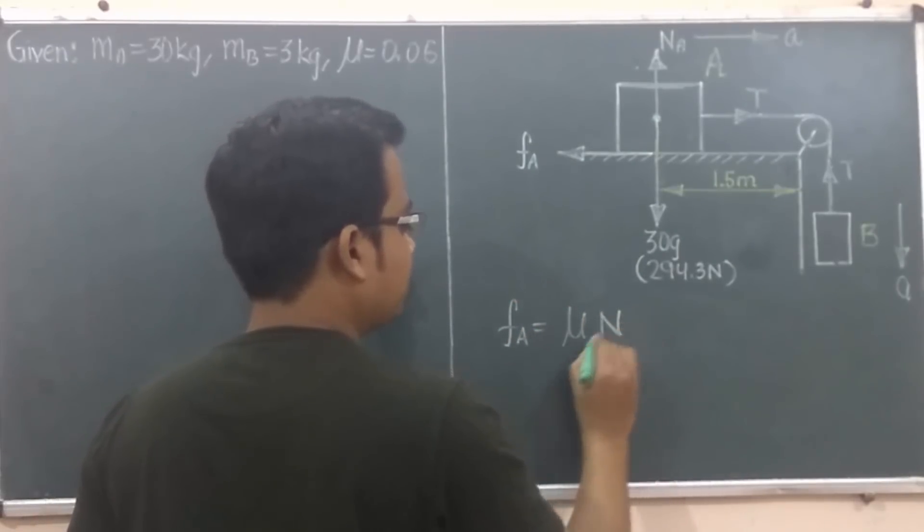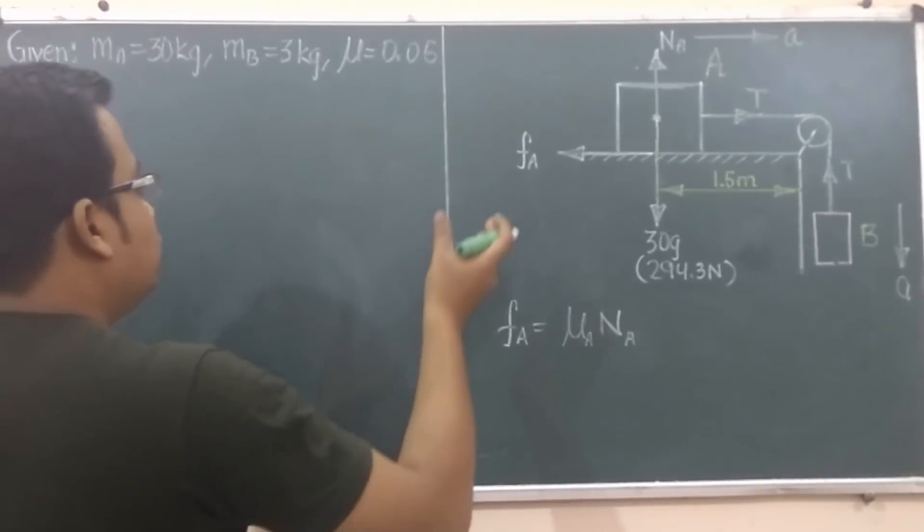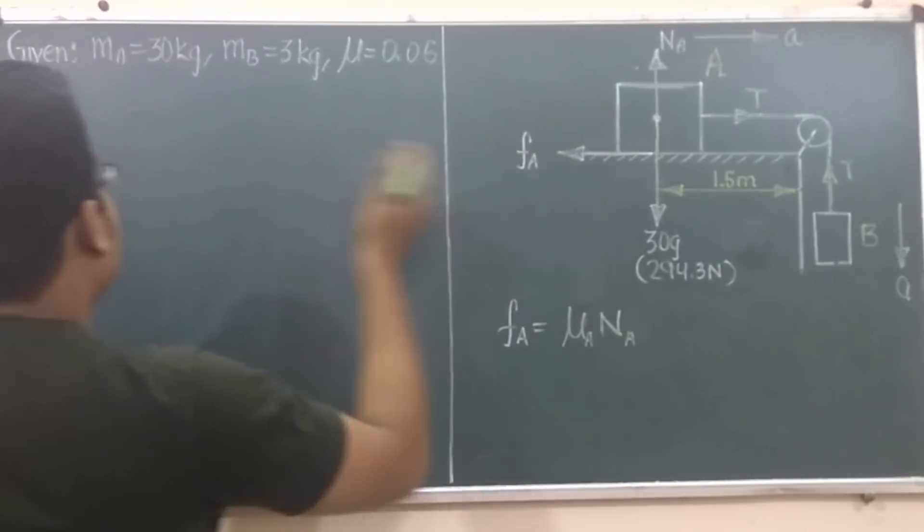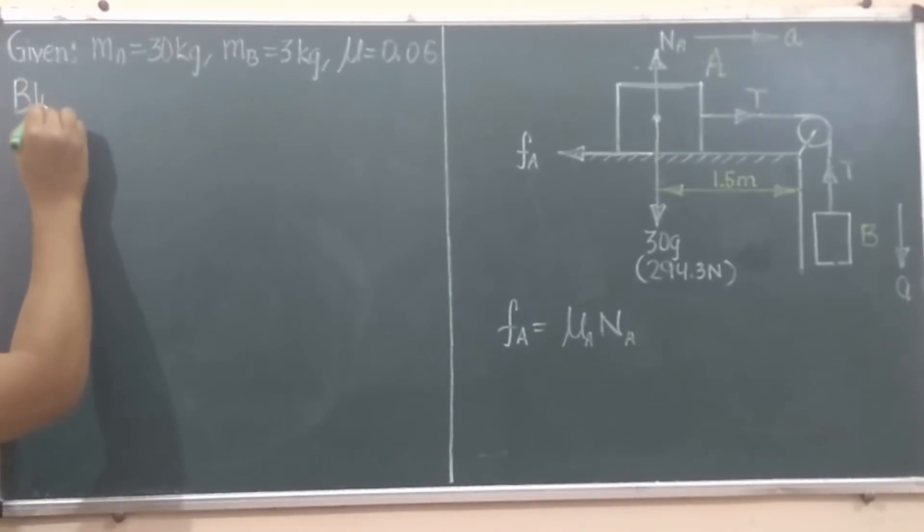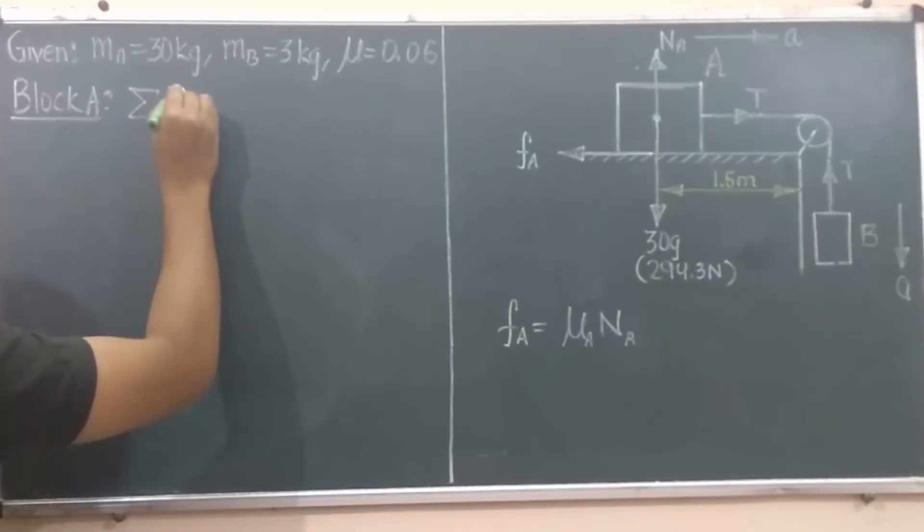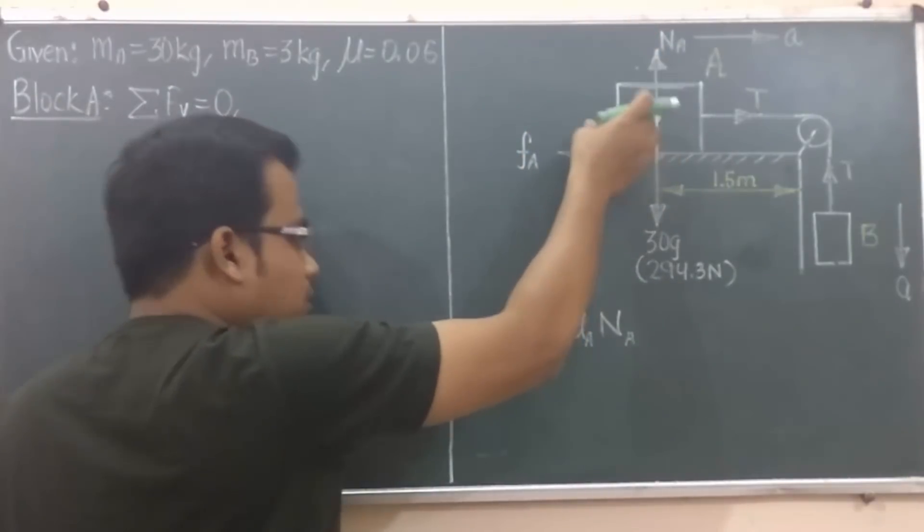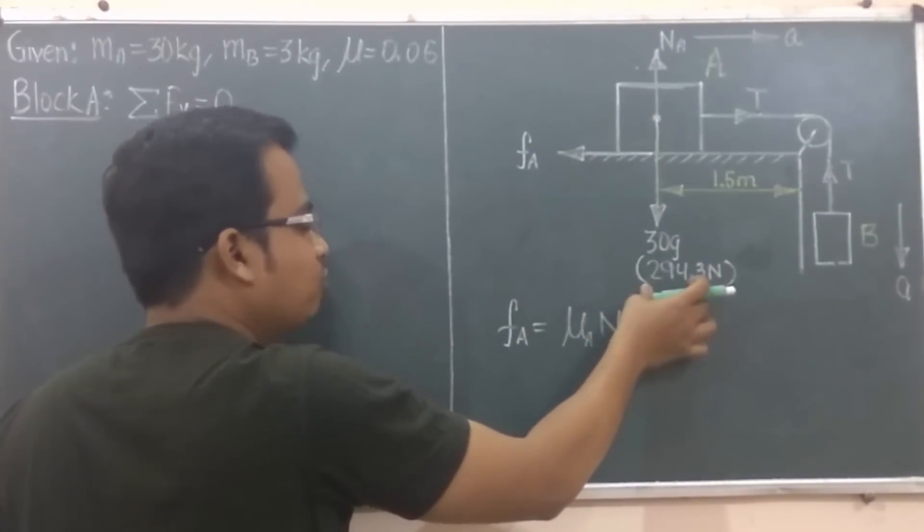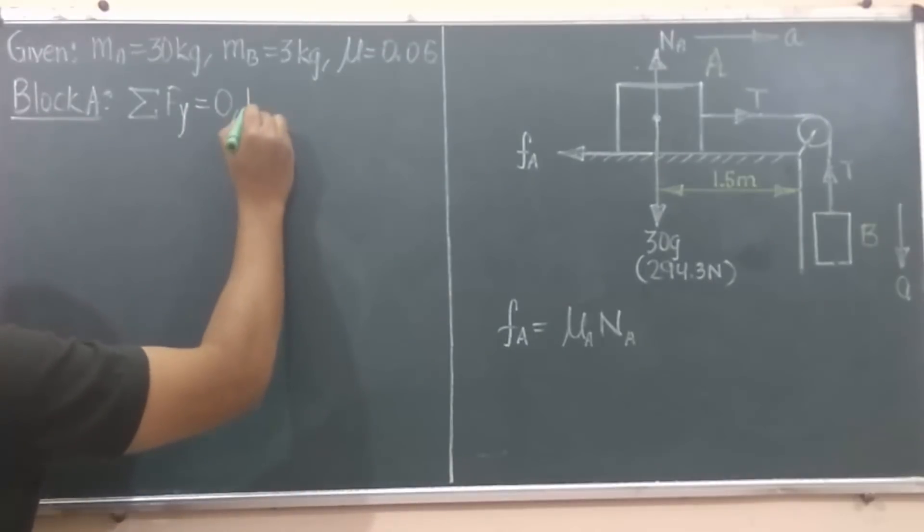On block A it's F_A, and you know very well that F_A is a product of μ times N. So μ_A times N_A. If I were to make the motion analysis for block A, since there is no motion along the y-axis, we'll have summation of all the forces in y direction equal to zero. So we have N_A positive and 294.3 weight of the block in the downward direction as negative, so N_A minus 294.3 equals zero, and N_A works out as 294.3 newtons.